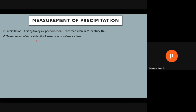To measure rainfall, you have a basic reference level, and from that reference level you find out the depth of water. That depth is considered as the measured rainfall. The rainfall is usually calculated in millimeters. If the amount of rainfall is very less you can tell it in millimeters, but if the rainfall is more you note it in centimeters.